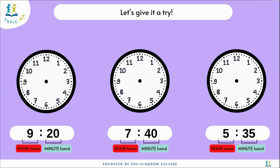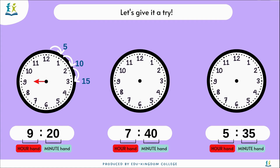Now, let's try to draw the clock hands on the analog clock from a digital clock's time. Since we know the hour hand is going to point to the number on the left on the digital clock, for the first clock here, the hour hand will be pointing to 9. For the minute hand, we need to count up by 5s until we get to 20: 5, 10, 15, 20. 20 is at 4, therefore the minute hand will be pointing to 4.